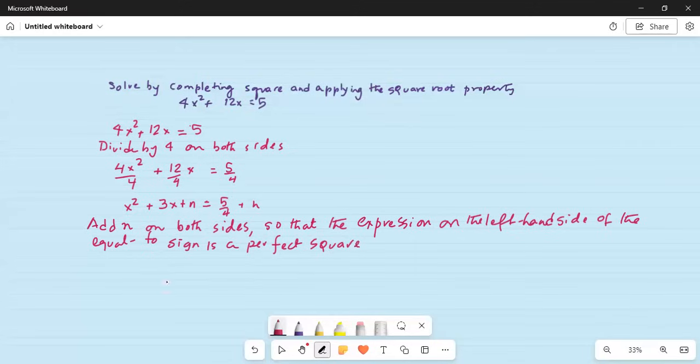So what is n? n is equal to half of the coefficient of x on the left hand side which is 3. Half times 3 and then it has to be squared. So n is equal to 3 by 2 square which is 9 over 4.